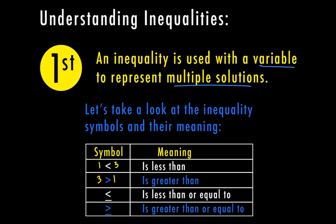The third symbol is the less than or equal to symbol. This means it can be less than or equal to. So if one is what I start with, my answer on the right side could be one, two, three, or any number that is equal to or greater than one.